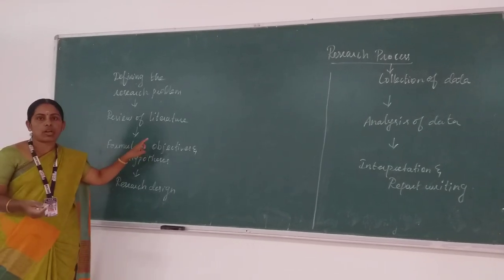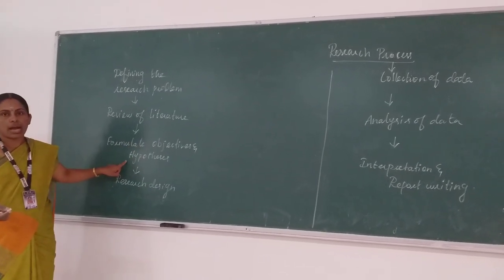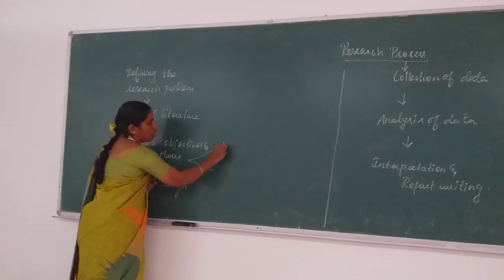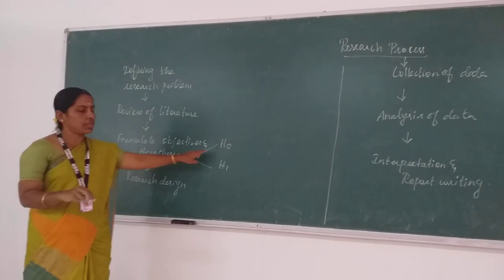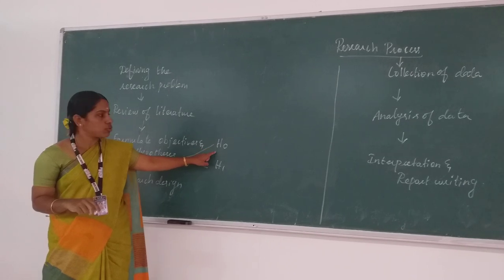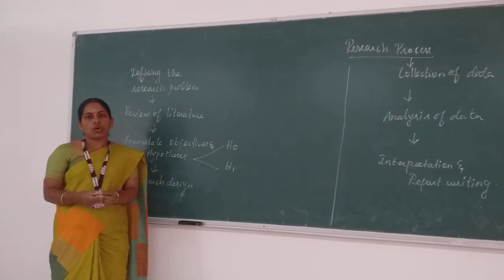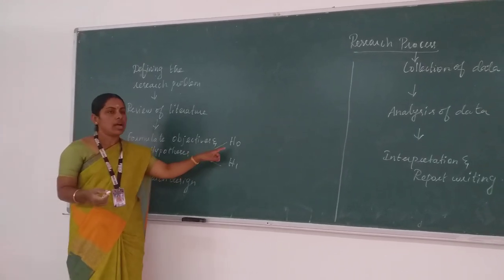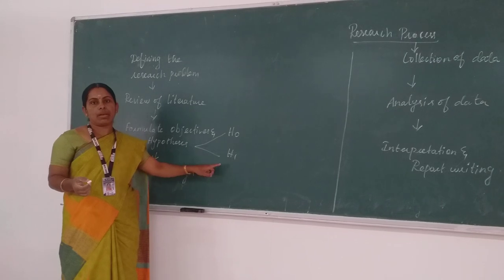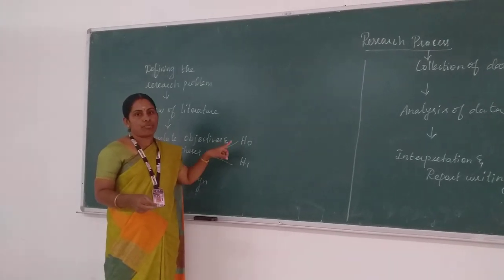We frame the objectives based on our research gap. Maximum five objectives is enough. After framing the objectives, we go to framing the hypothesis. Hypothesis means assumption. We have two types: null hypothesis and alternative hypothesis. H0 denotes null hypothesis and H1 denotes alternative hypothesis. For example, a null hypothesis: there is no relationship between relationship marketing and customer retention. For alternative hypothesis, we frame it in a positive way — for example: there is a relationship between relationship marketing and customer retention.